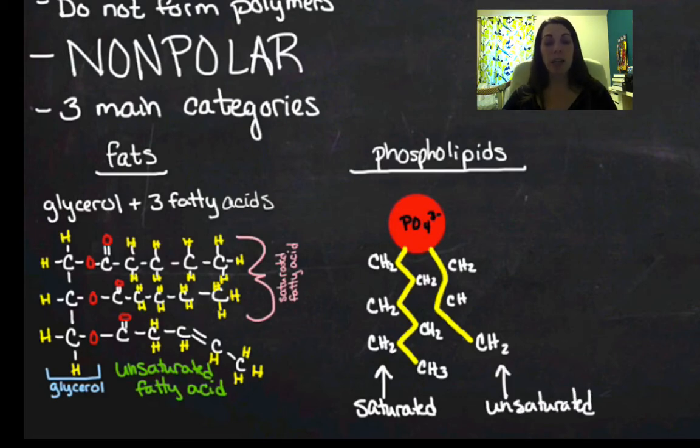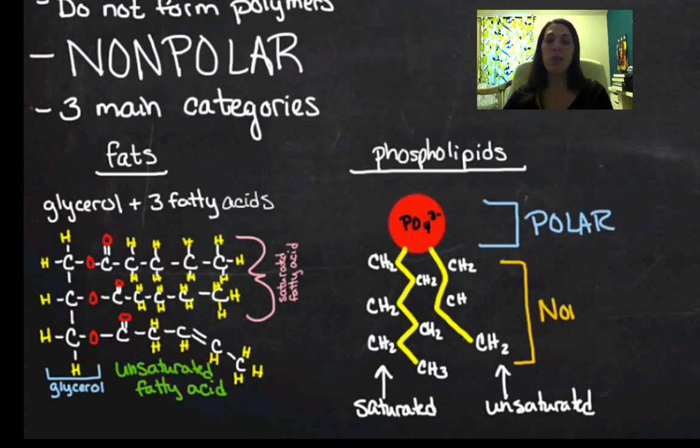Now phospholipids are special because I just got finished telling you that lipids, it's really super important that you know that lipids are nonpolar. Except for the fact that the phosphate group on a phospholipid is actually polar. And then the rest of the molecule is nonpolar. And this gives it some special properties that we're going to talk about a little later in the video as to how they actually arrange themselves because they have a polar part and a nonpolar part.